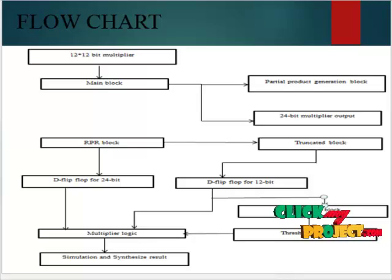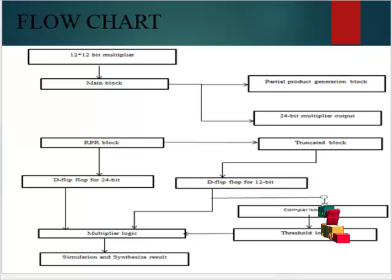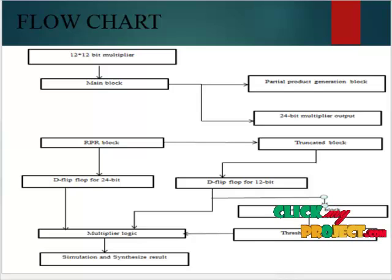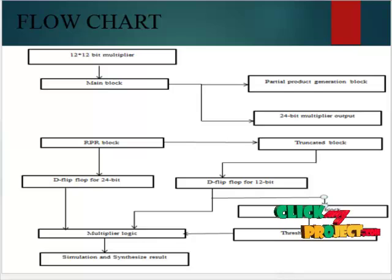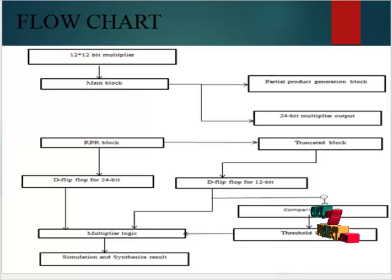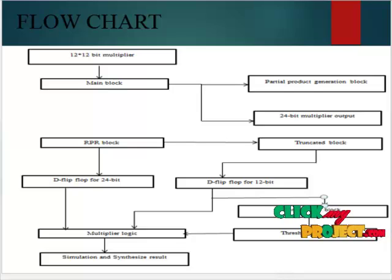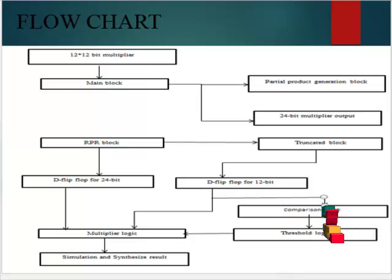To give the 12-by-12-bit input to the multiplier, we have designed 144 unit gates. By using the realization of gates, the partial product generation will be performed with 24-multiplier logic. As a result, the partial product generation provides 24 bits as output.